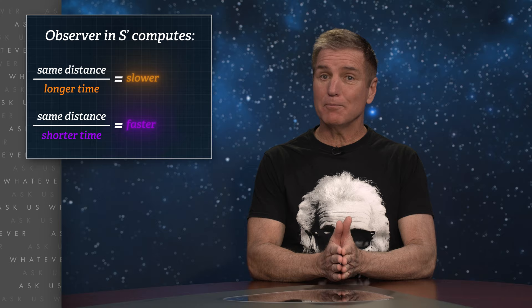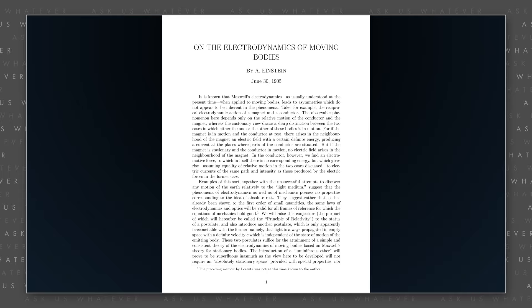And what do we get when we divide the same distance by different travel times? Different speeds! So when the same distance as measured by an observer in S-prime — such as the distance around a closed loop — is divided by a longer time in one direction and a shorter time in another direction, that observer computes different speeds in the different directions.